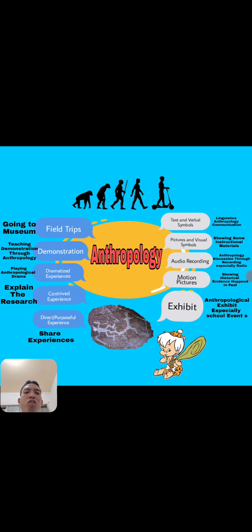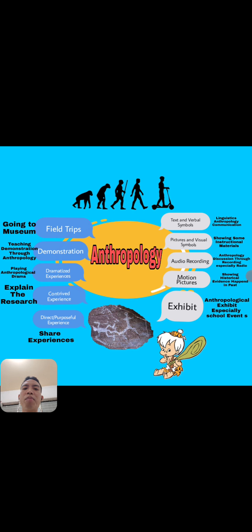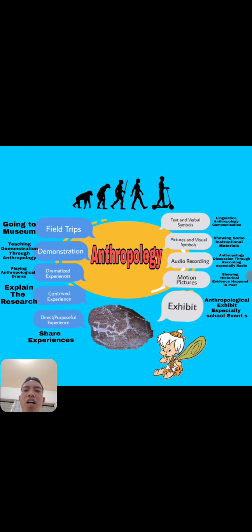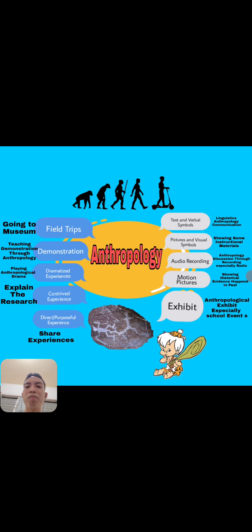The next is contrived experience, which involves explaining research. This refers to research from anthropology — discovering things from anthropological, scientific, or biological anthropology.